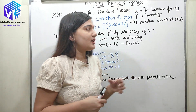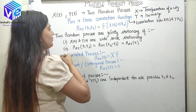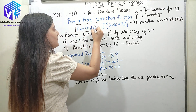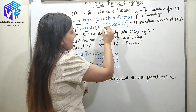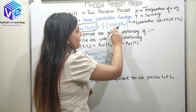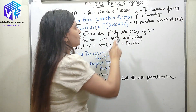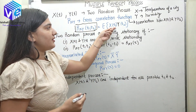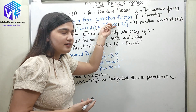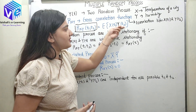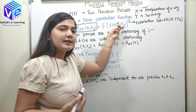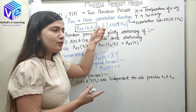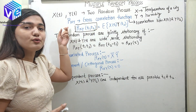Because these are two random variables, till now we had studied only the auto correlation function because we had only one process. Now with two random processes, the cross correlation function R_XY(t1, t2) is found using E[ X(t1) · Y(t2) ] — that is, I multiply the first random process at time t1 by the second random process at time t2 and then take the mean, which gives me the cross correlation function.